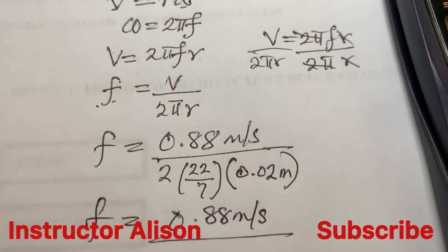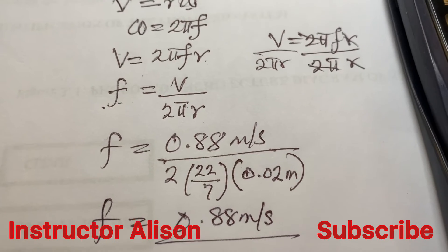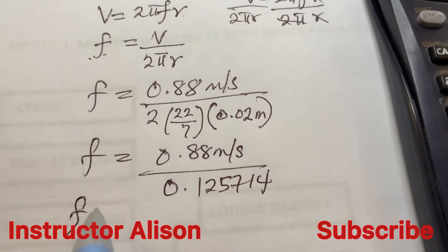2 multiplied by 22 over 7 multiplied by 0.02, the result is 0.1257 and other fractions. So if we divide - if you divide this 0.88 by the answer, then you have the result to be 7.